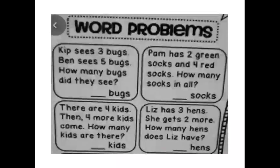Now let's have a recap. Kip sees 3 bugs and Ben sees 5 bugs. How many bugs did they see? Finger 3, mind 5. After 5: 6, 7, 8. Total 8 bugs.